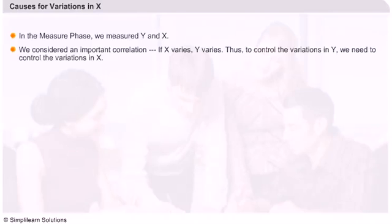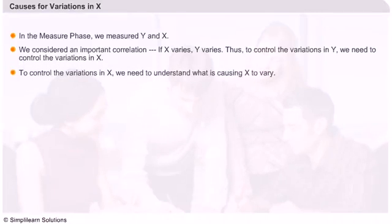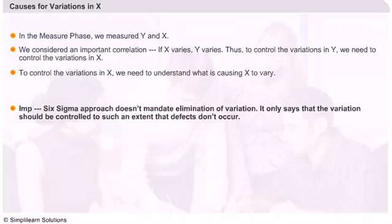Now to control variations in X, we must first know what kind of causes result in X to vary. What you should know is this: Six Sigma approach doesn't mandate elimination of variation. It only says that variation should be controlled to such an extent that defects don't occur.